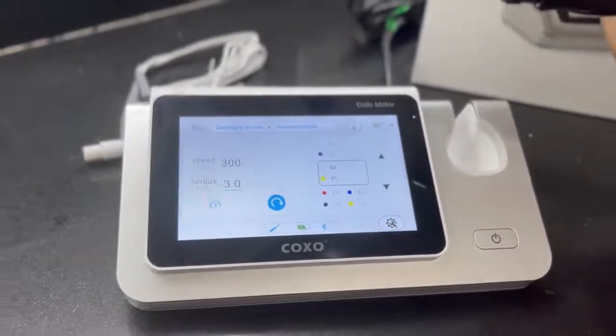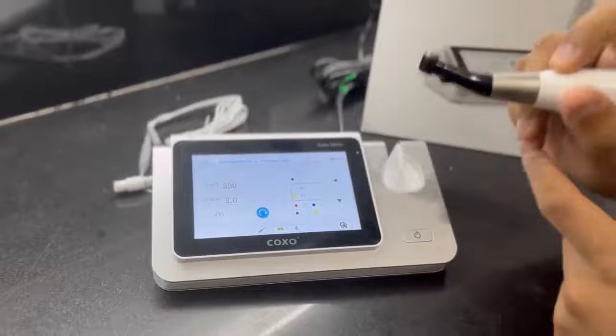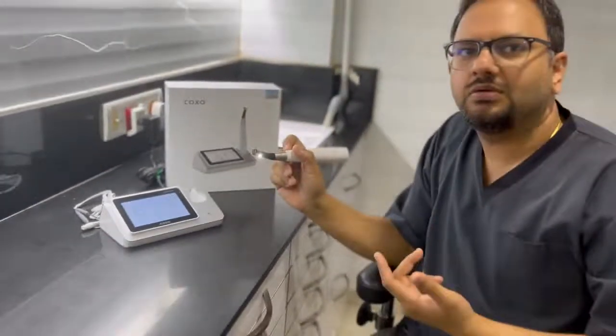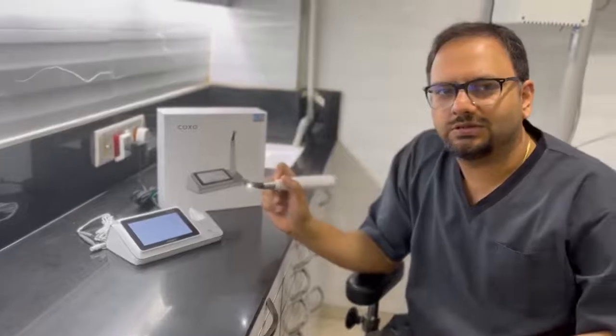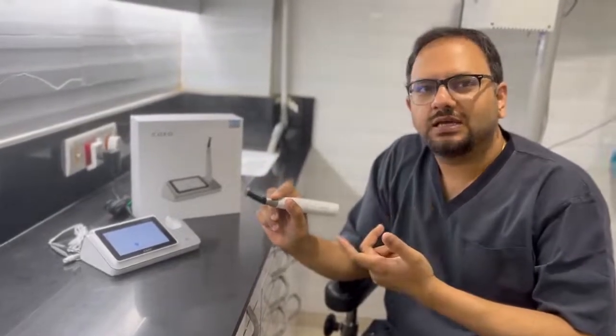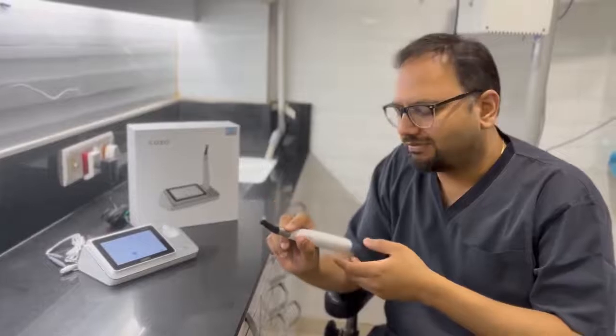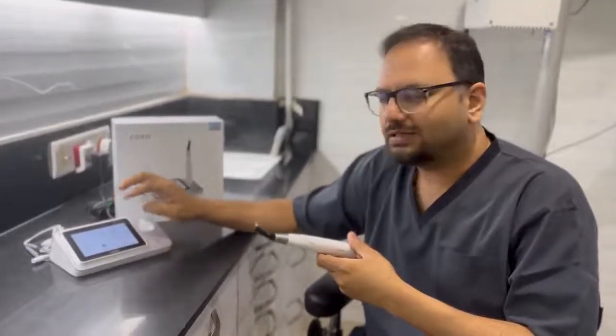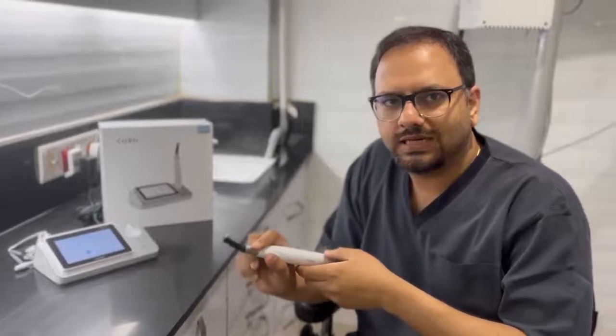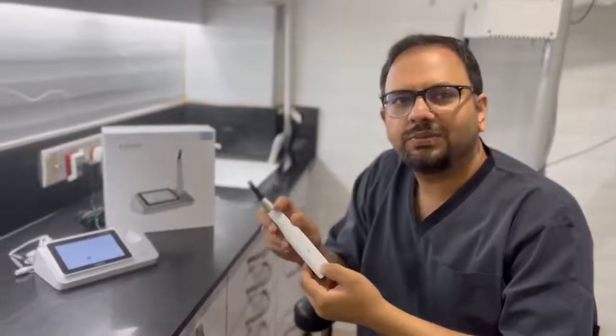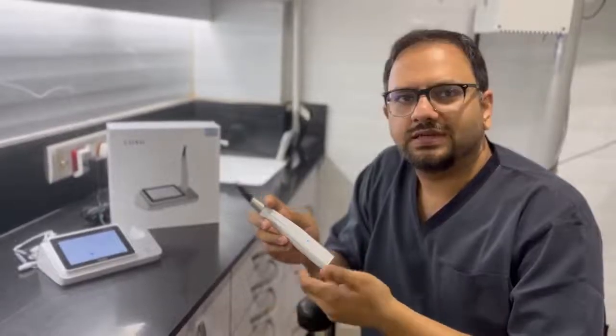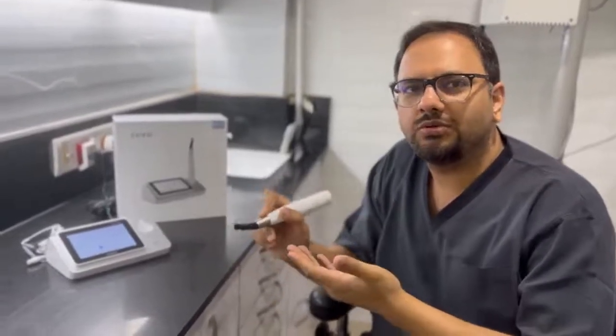Once I choose the particular setting and I start the unit, it automatically starts rotating or reciprocating as per the function of the model. Now if I need to change this to the next file, I have an option of either going back to the base model and increasing or decreasing the setting on the file, or I can simply press the single button that is over here to just switch to the next file. So I don't need to go back to the module each and every time.